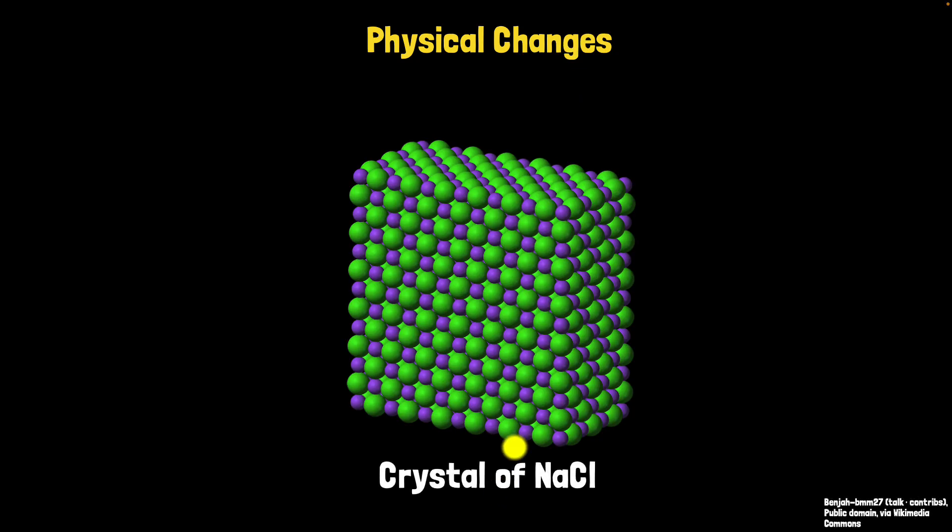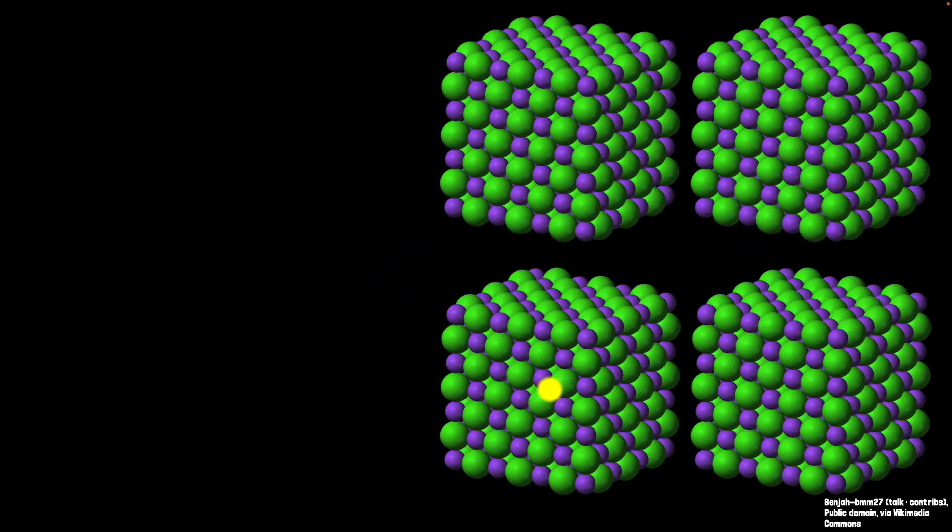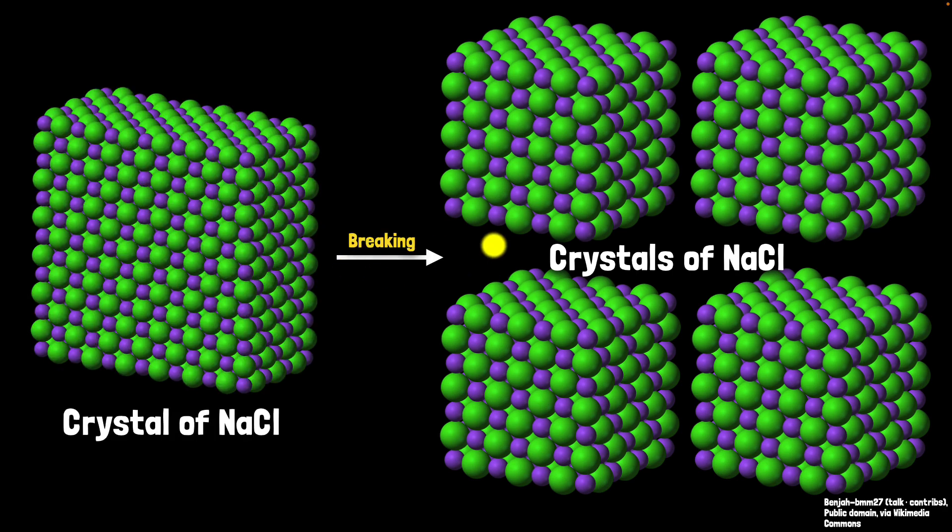But first, let's recall what physical changes are. If you take, for example, a crystal of NaCl—which is basically table salt—and let's say you hammer it and break it into tiny pieces, what you get is still crystals of NaCl. You haven't changed the identity or anything. You've just broken it down. Look, the ratios of the sodium and the chlorine, the ratios of all the atoms that make them up—they're all exactly the same.